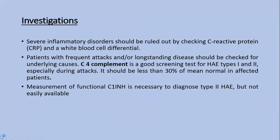Investigations: severe inflammatory disorders should be ruled out by checking CRP and WBC count. Patients with frequent or long-standing disease should be evaluated for underlying causes. C4 complement is a good screening test for hereditary angioedema Types 1 and 2, especially during attacks — it should be less than 30 percent of normal in affected patients. Measurement of functional C1 inhibitor is necessary to diagnose Type 2, though this test is not readily available.